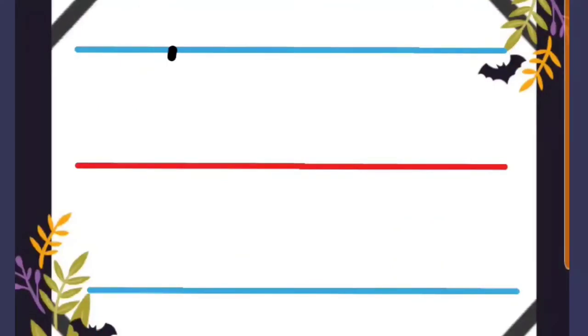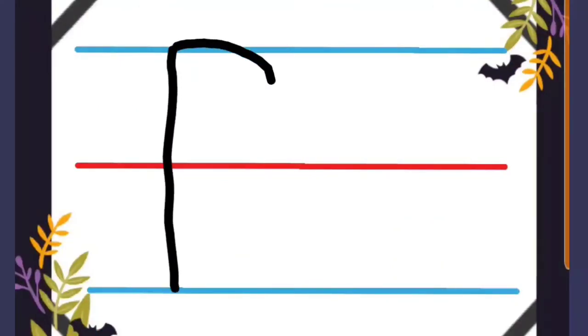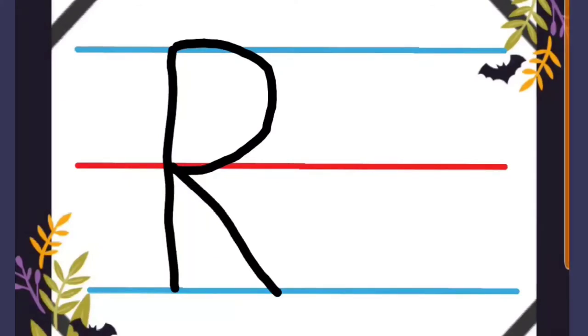Letter R. Draw a straight line down, curve line, and slant line. For the baby, straight line down, go to the middle, slant line up, and down.